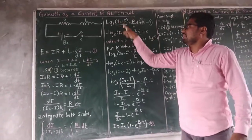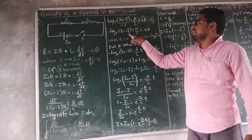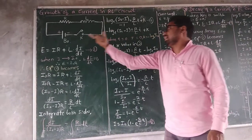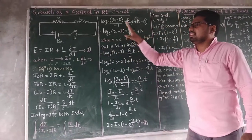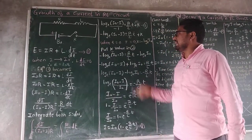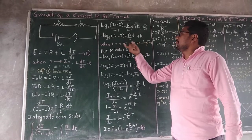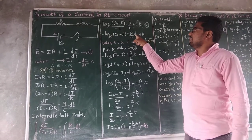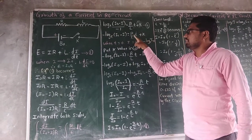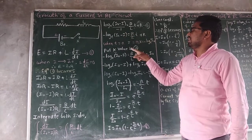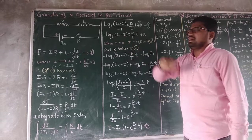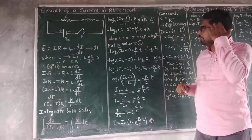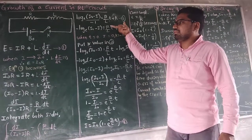So log(I₀ - I) = (R/L)T + K. Applying the initial condition: at T = 0, there is no current, so I = 0. Substituting gives K = -log(I₀). Therefore K = -log I₀ (to base e). Substituting this K value back into equation 2.